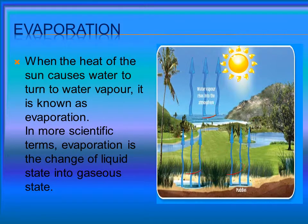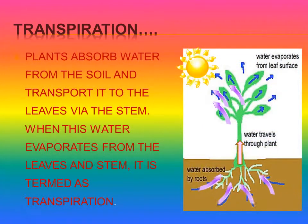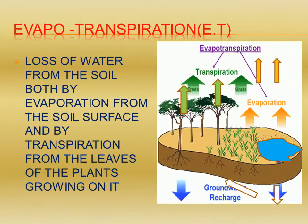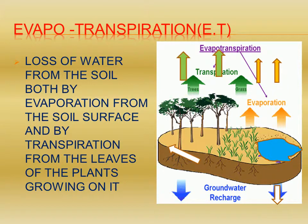In more scientific terms, evaporation is the change of liquid state into gaseous state. Next, Transpiration: plants absorb water from the roots and transport it to the leaves via stems. When this water evaporates from the leaves and stems, it is called transpiration. Loss of water from the soil surface by evaporation and from plant leaves is called evapotranspiration, which equals evaporation plus transpiration.